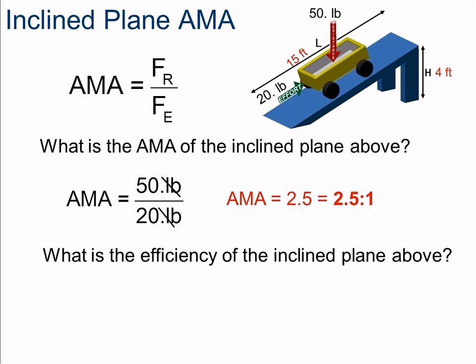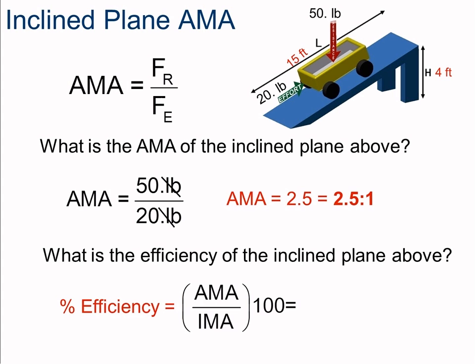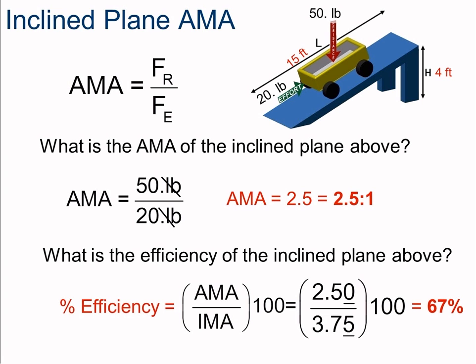Efficiency is the ratio of the actual mechanical advantage to the ideal mechanical advantage. That's 2.5 divided by 3.75 times 100, giving us 67% efficiency. Better than 50-50, but there's quite a bit of loss from friction — the axles rubbing against the inside of the wheels and the rotational inertia of those wheels.